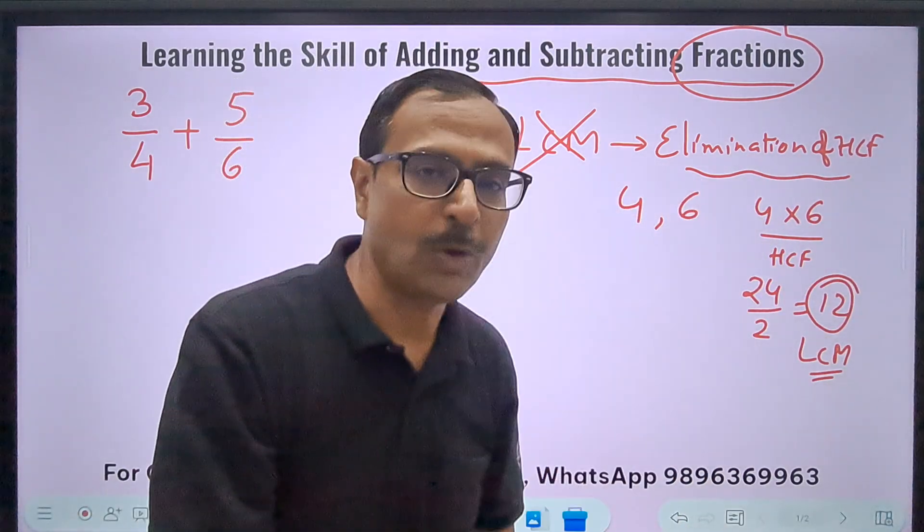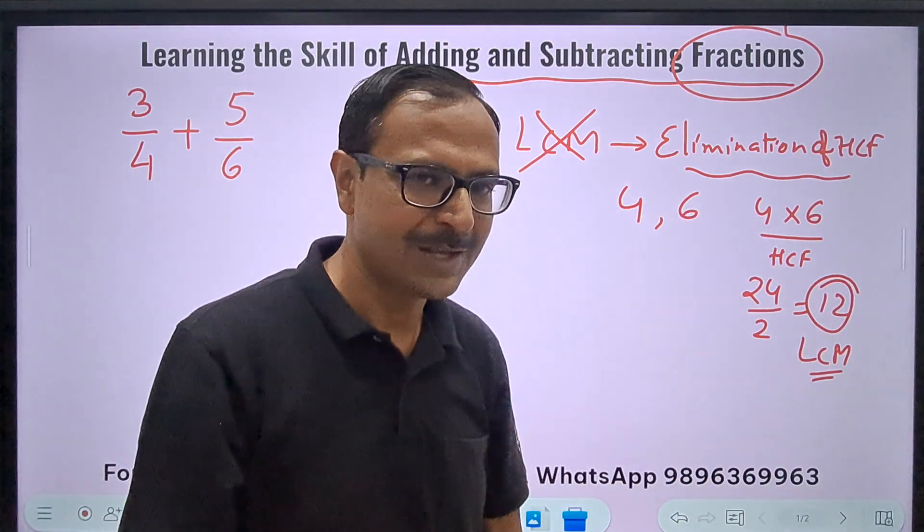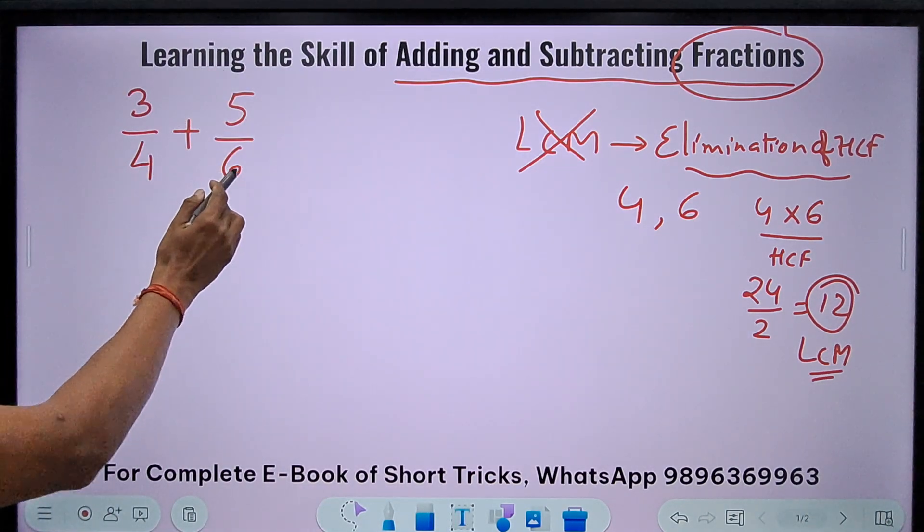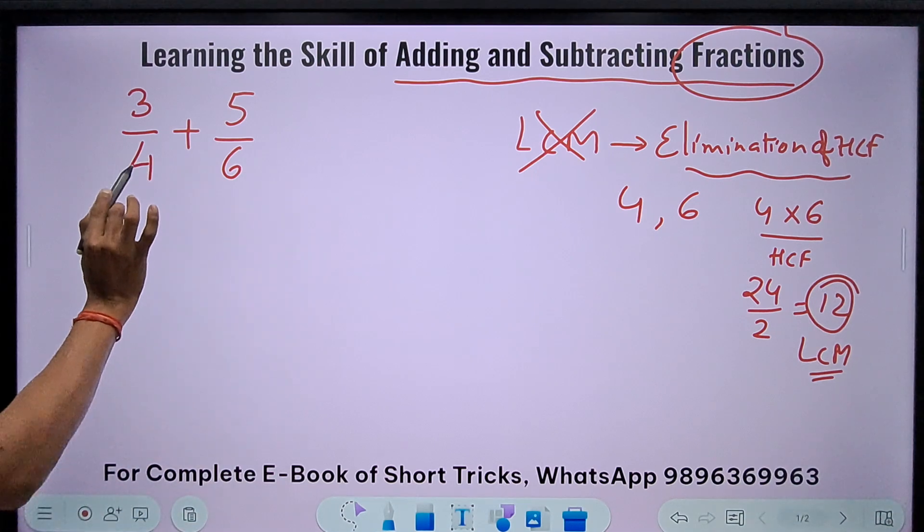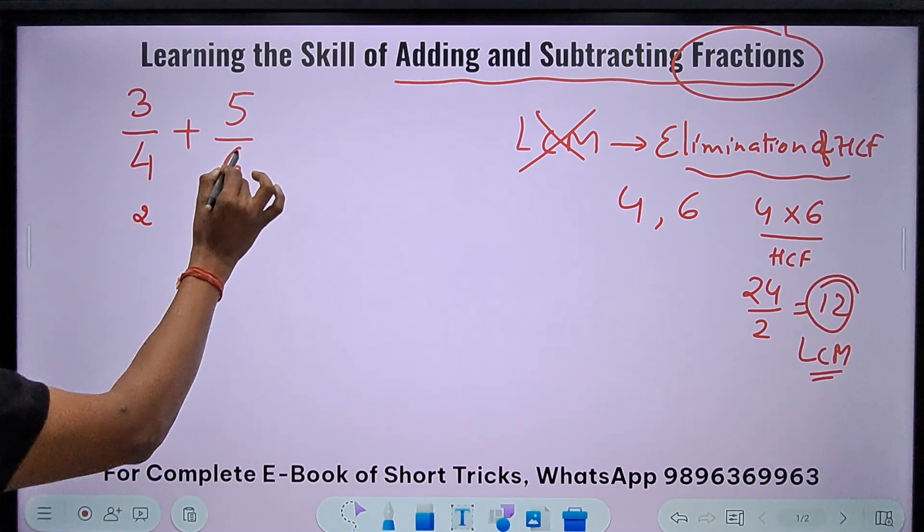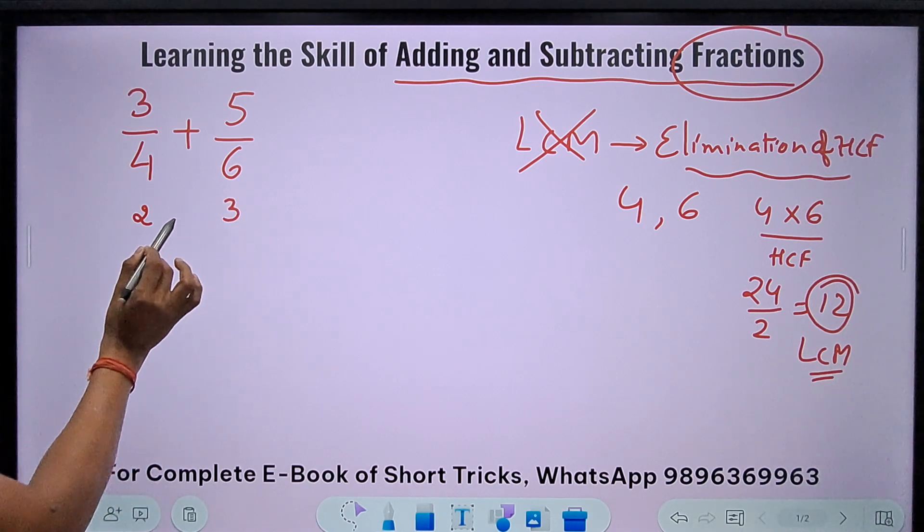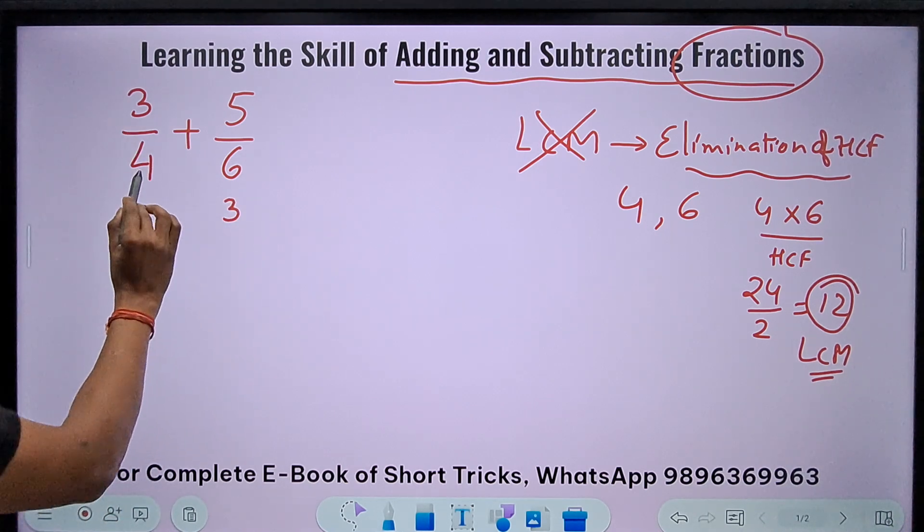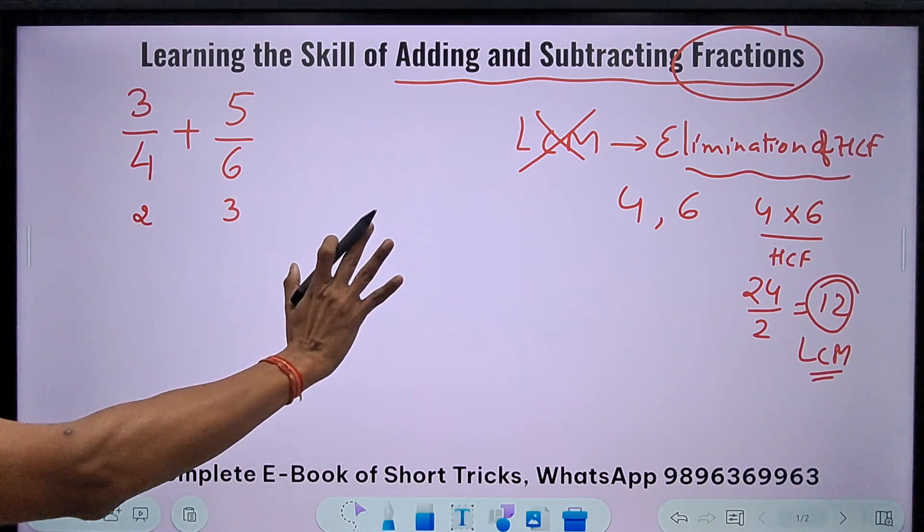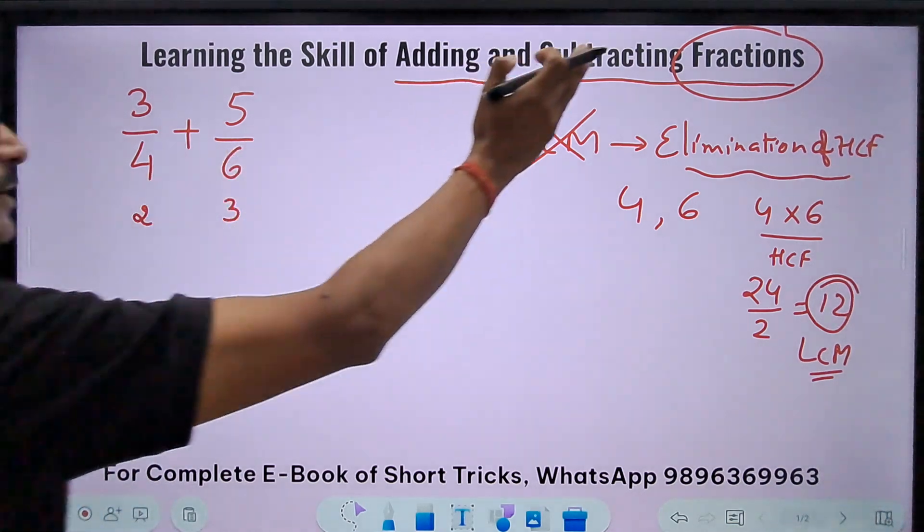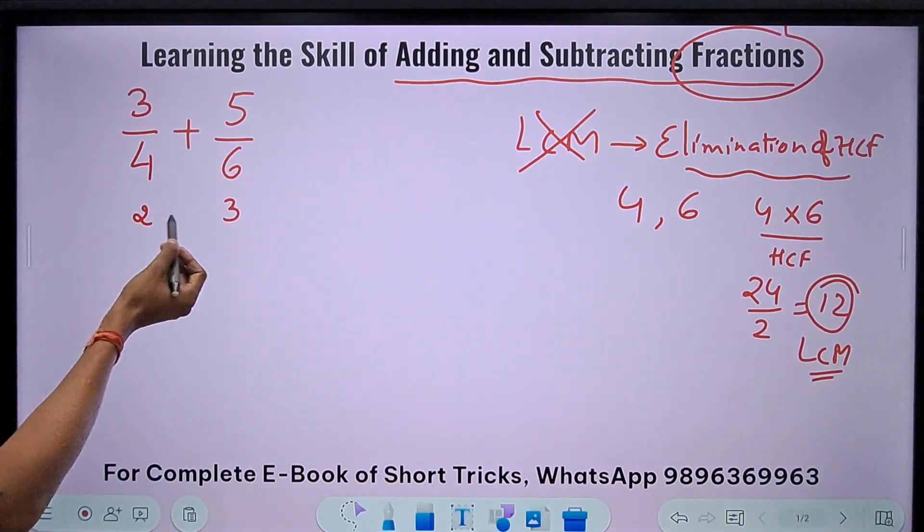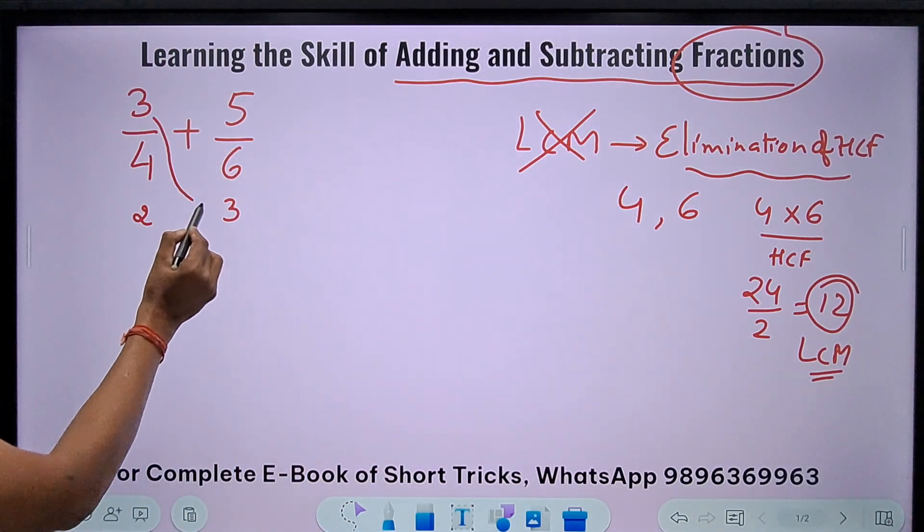Now this is the logic. Whatever I do here is based on this logic: I am trying to eliminate the highest common factor between the denominators. So watch. I know that the highest common factor between 4 and 6 is 2, so I will divide 4 by 2. 4 divided by 2 is 2, and 6 divided by 2 is 3. Now instead of using 4 and 6, I got two prime numbers. 2 and 3 are not divisible by any other number because I have eliminated the highest common factor between 4 and 6.